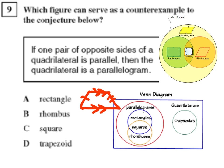So obviously in this question, our answer would be D. Our counterexample would be D, proving that not all quadrilaterals that have one pair of opposite sides are a parallelogram.